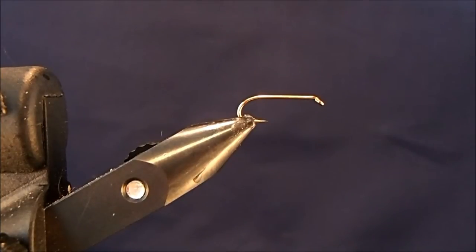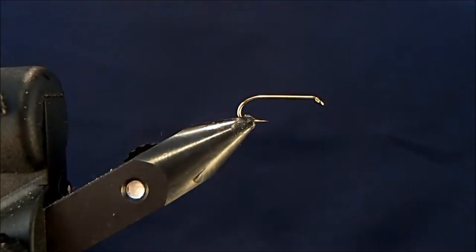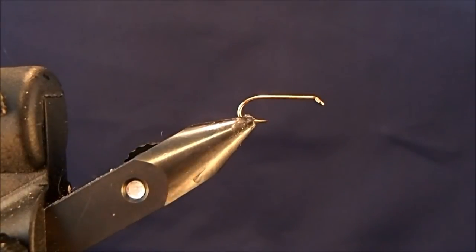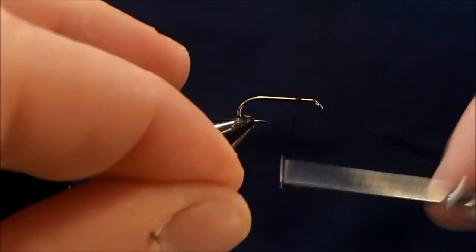So we're going to tie a wet fly. This is a pheasant tail wet. I'm starting off with a size 12 wet fly hook. I'm going to use ADOT black thread for this.